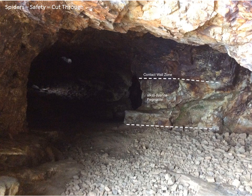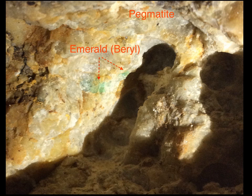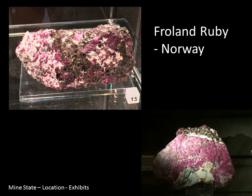Inside the mine you can see where the alkali syenite pegmatite cuts through the rock like a sill, with contact zones visible. You'll find emeralds very close to the contact. There's some visible green emerald mineralization — and it's very tempting to hack at the walls, but you can't.